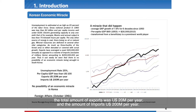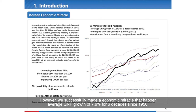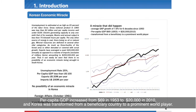The amount of imports was 200 million US dollars per year. However, we successfully made an economic miracle, achieving average GDP growth of 7.6% for six decades since 1950. GDP increased from 69 dollars in 1953 to 20,000 dollars in 2010. Korea transformed from a beneficiary country to a prominent world player.